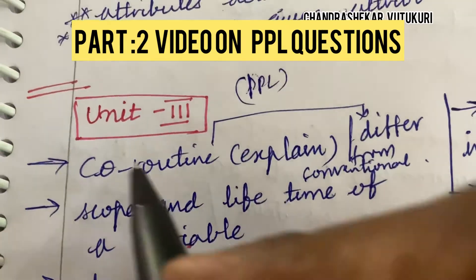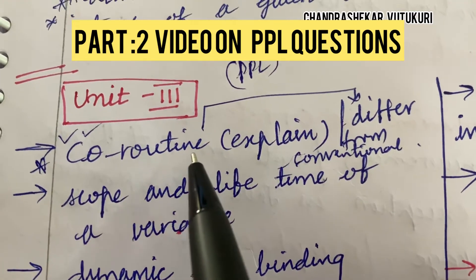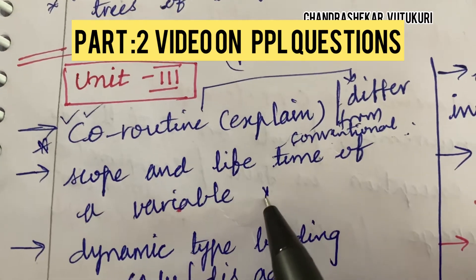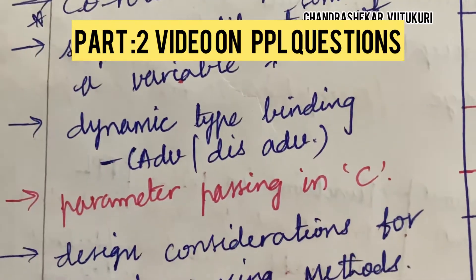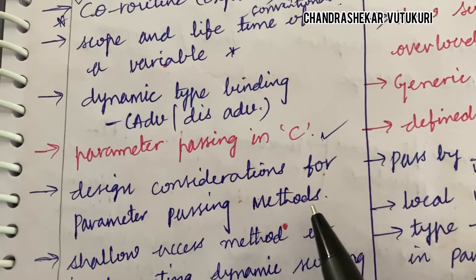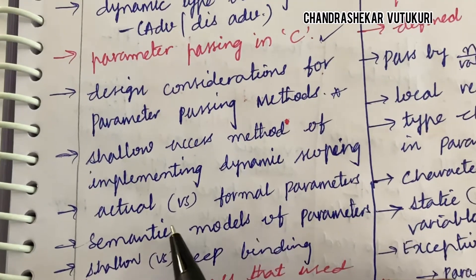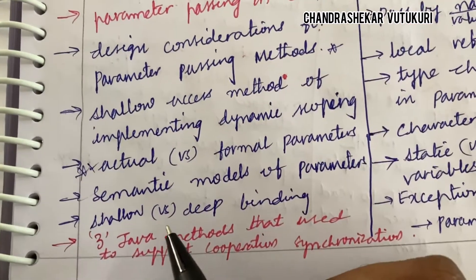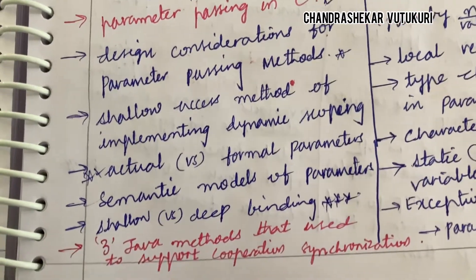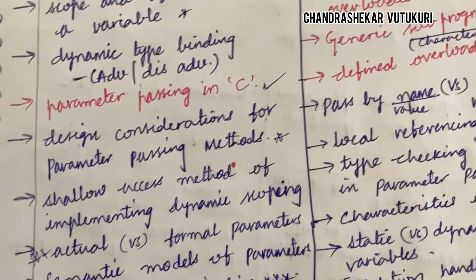Coroutine is said to be a topmost and sure short question — explain it and how it differs from the conventional program. Scope and lifetime of a variable is a short question. Dynamic type binding, its advantages and disadvantages, and parameter passing in C are important. Design considerations for parameter passing methods is a topmost question. Shallow access method of implementing dynamic scoping, actual versus formal parameters and their differences, semantic models of parameters, and shallow versus deep binding are also topmost and short questions. Three Java methods used to support cooperation synchronization is also very important.